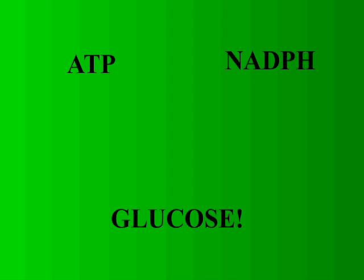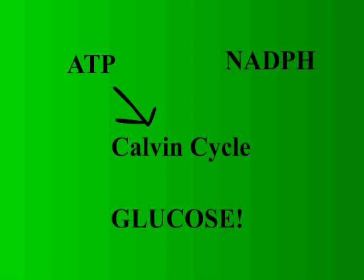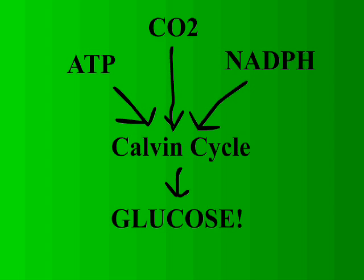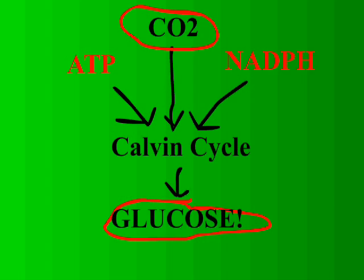So we have ATP and NADPH — we still need to make glucose. The plant is going to use something called the Calvin Cycle to do this. The Calvin Cycle is a series of chemical reactions that uses the carbon in carbon dioxide to create glucose. This is called carbon fixation, since the carbon is being fixed into an organic compound. Creating glucose takes a lot of energy, but we have plenty of ATP and NADPH from the last step. Carbon dioxide enters the Calvin Cycle and glucose comes out. Glucose is made, so that's the end of photosynthesis.